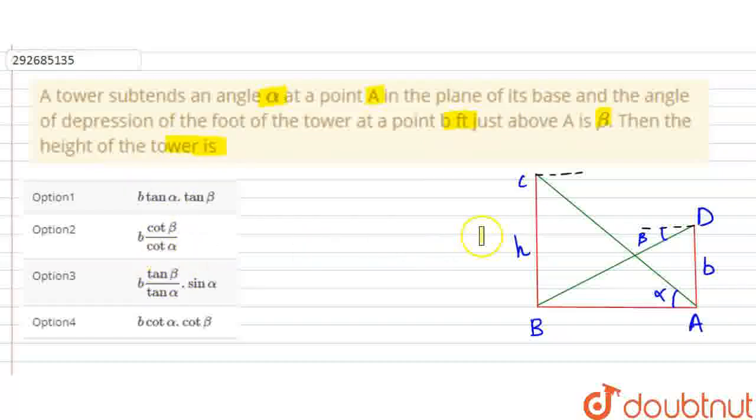The height of the tower is CB and its height is H. The angle of description is alpha at this point A. And the angle of depression of the foot of the tower is at a point B feet just above A. So from A to B feet above, the angle of depression is beta.